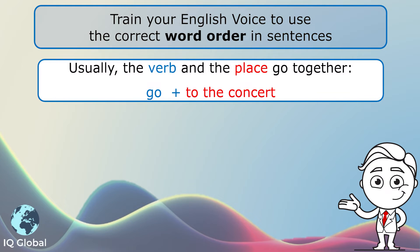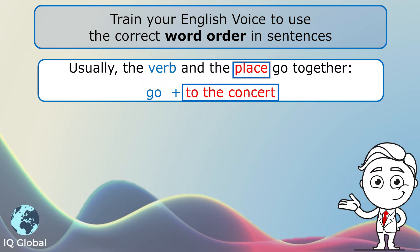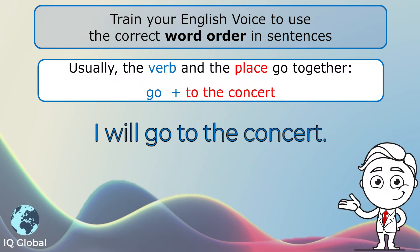Usually the verb and the place go together. Have a look at the example — 'go' is the verb, 'to the concert' is the place. So I could say: 'I will go to the concert.' The verb and place are together in that sentence.